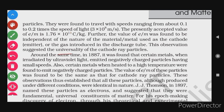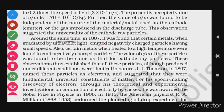Around the same time, in 1887, it was found that certain metals when irradiated by ultraviolet light emitted negatively charged particles having small speed. So when ultraviolet radiation falls on certain metals, they emit negatively charged particles — that is, electrons — with small speed.